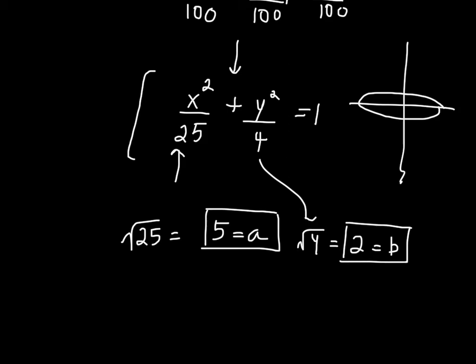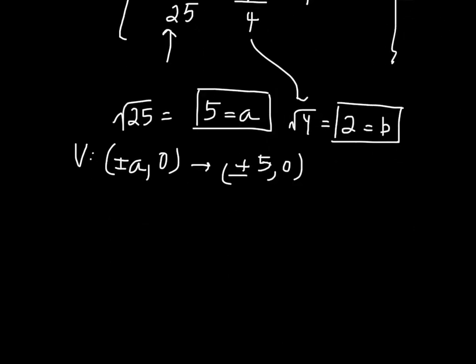Our a value will tell us what our vertices are, so we have plus or minus 5, 0. And then our b will tell us what our distance to our co-vertices are, so we have 0 plus or minus 2.